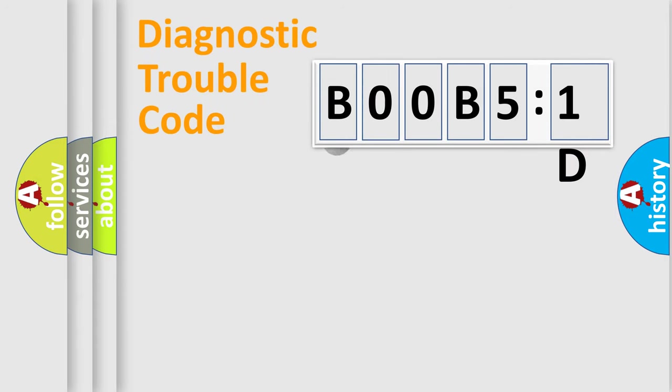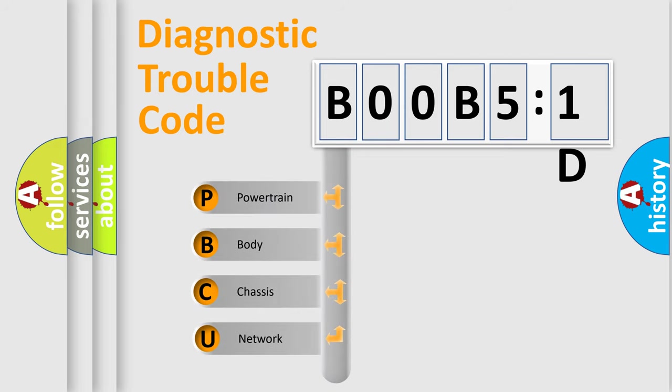First, let's look at the history of diagnostic fault code composition according to the OBD2 protocol, which is unified for all automakers since 2000. We divide the electric system of automobile into four basic units.